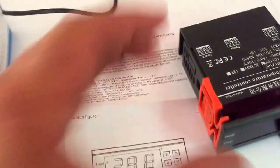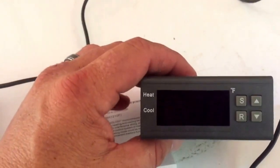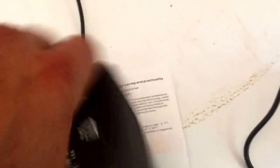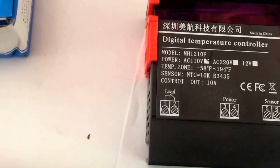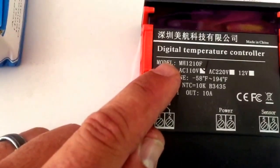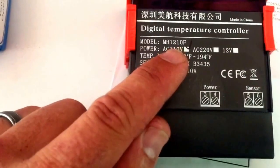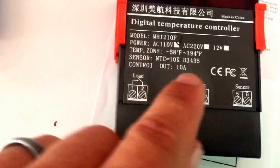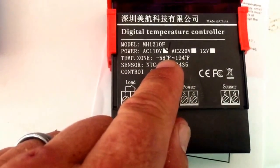So I paid like $16 for it. You can kind of see some of the specifics here - that's the model number, 110 volts. It can go negative 58 Fahrenheit to all the way up to 194 Fahrenheit, and it's real simple.